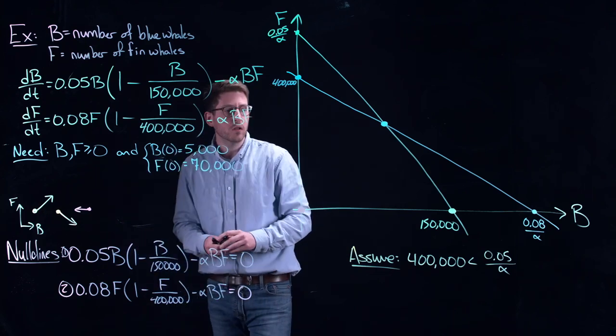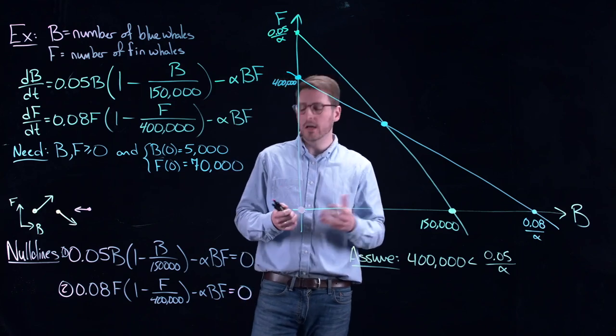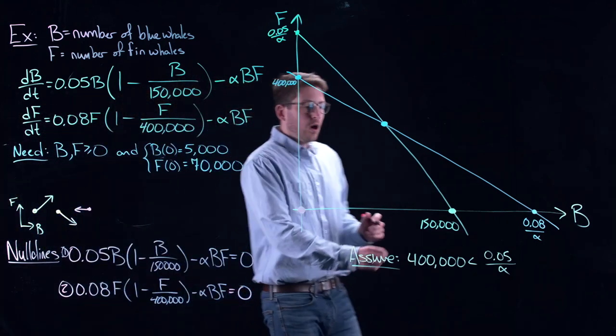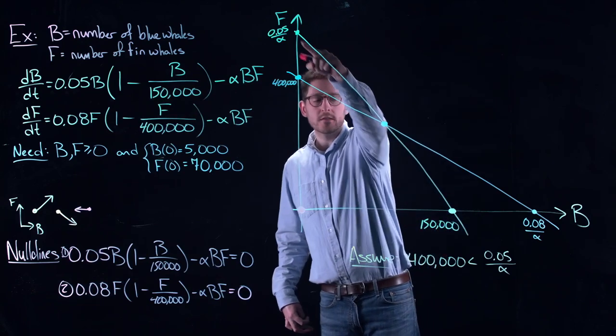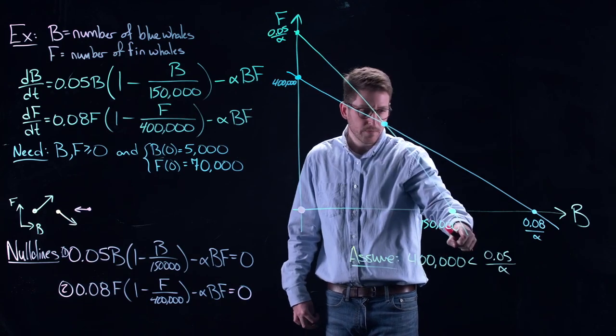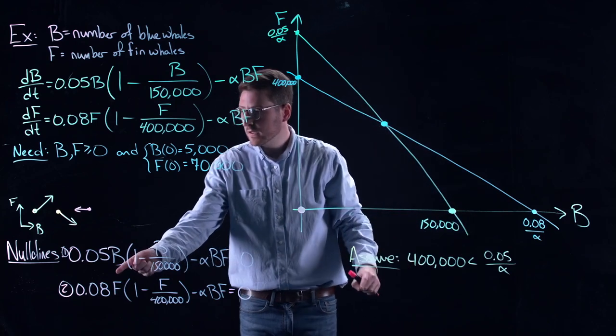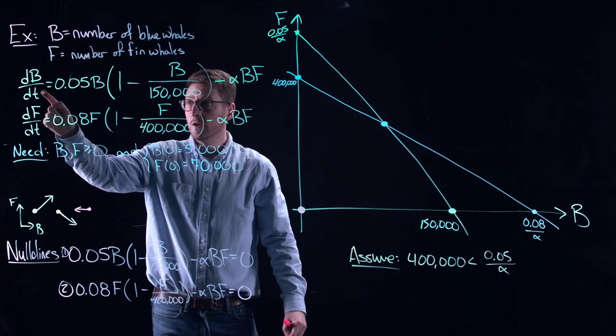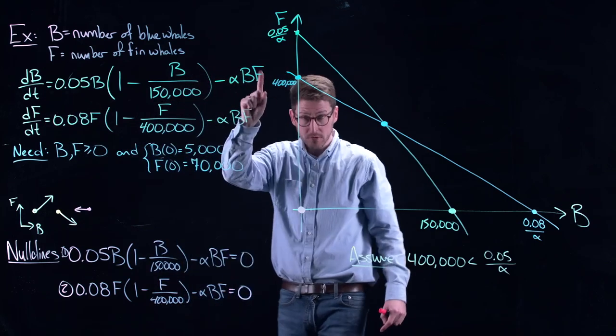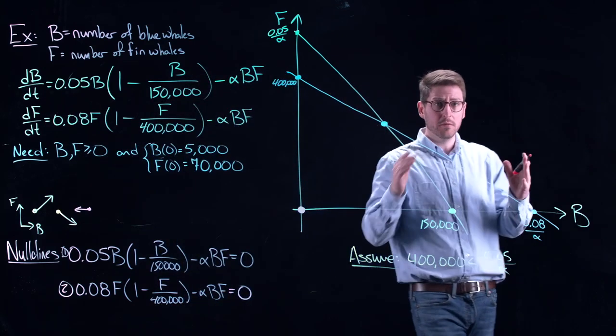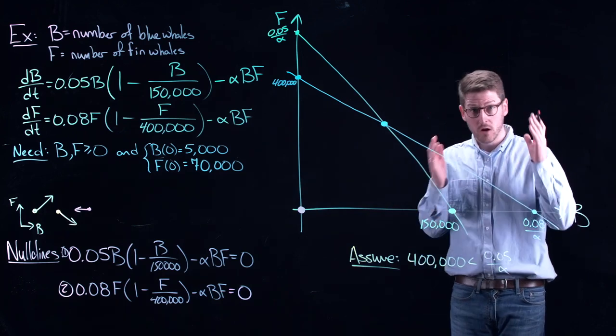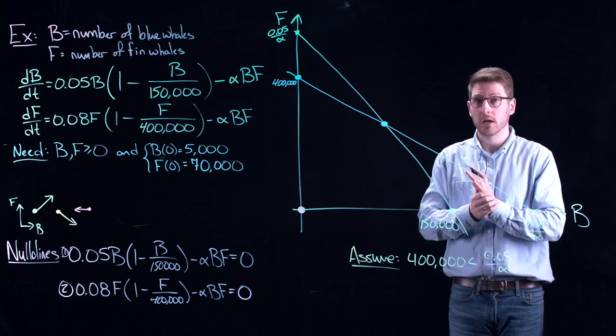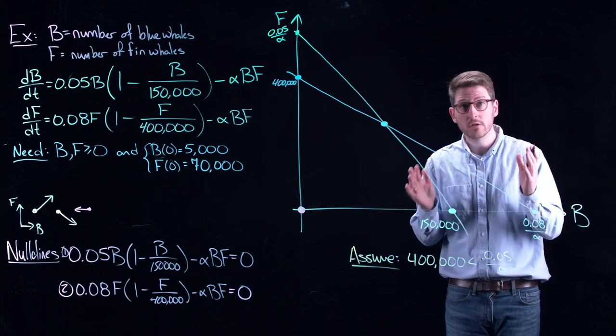So now, let's ask ourselves, what do the vectors look like on each of the null clines? Well, this is nullcline 1. It's the first one that I drew. In that case, the B component of every vector is 0. So that means that all vectors are pointing either straight up or straight down. I'm not going to be concerned with lengths of vectors. All I care about are directions. That's the only thing that we're interested in here. This is called a direction field.